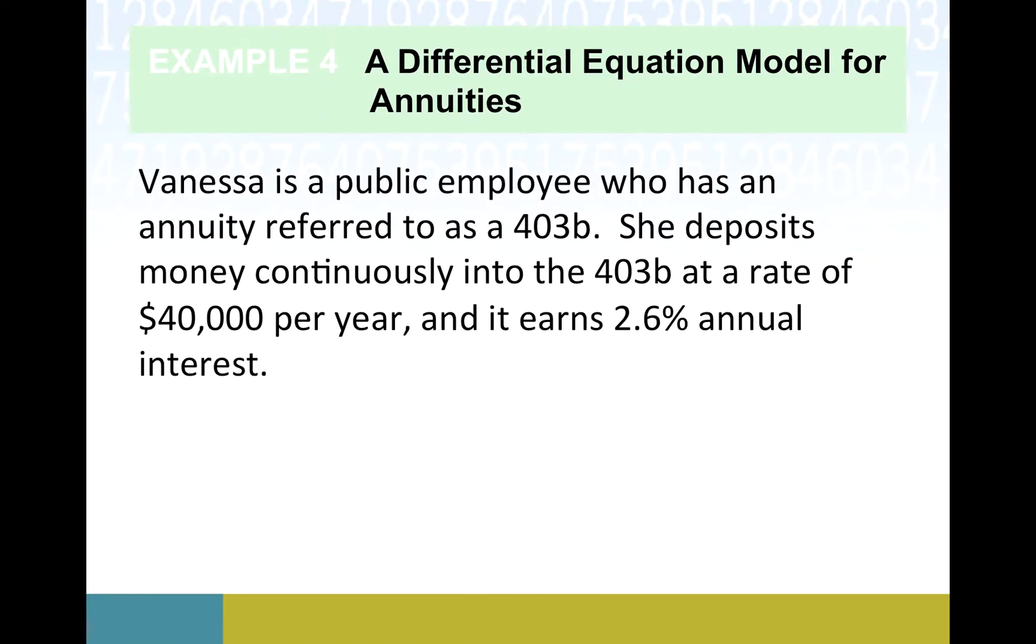And here it is. Lots of words. Vanessa's a public employee who has an annuity. So she's got this 403b. She puts in money, and there's some nuance here, but continuously is implying that basically there's just constantly money being slowly trickling from her account into this 403b at the rate of, by the end of each year, $40,000 hits. Stroke of midnight, Happy New Year, confetti, and she hits the $40,000 mark. Then $80,000 by the next year.